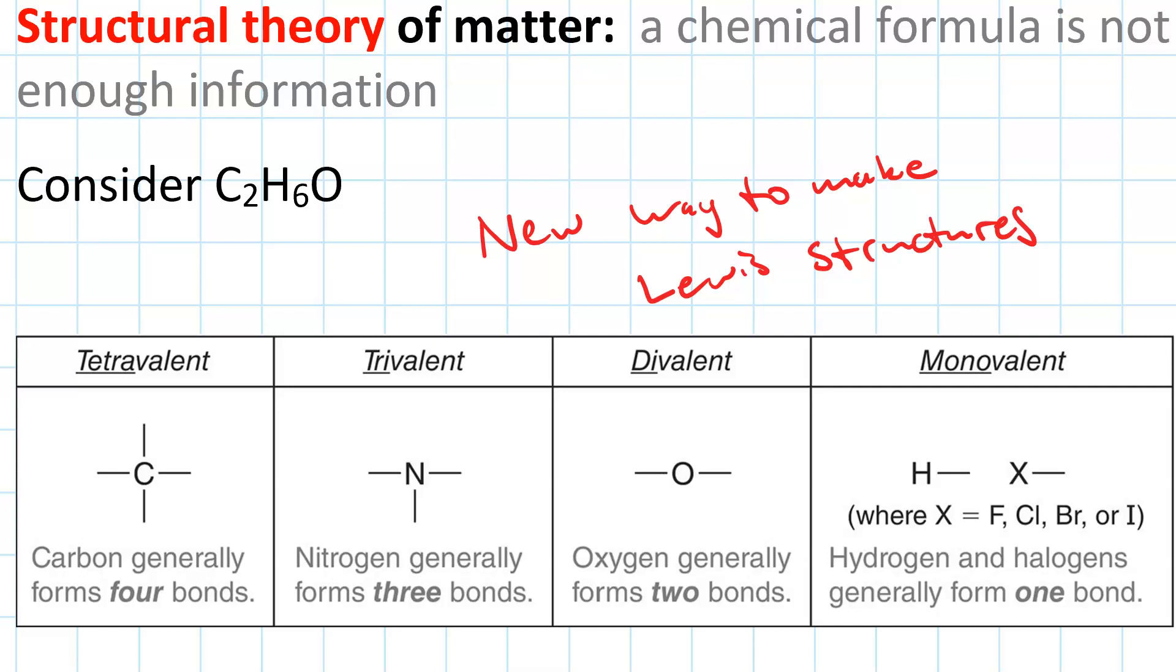A carbon atom has four valence electrons, which means it has four unpaired electrons in its Lewis symbol. So it can make four bonds: four single bonds, two double bonds, a double and two singles, or a triple and a single.